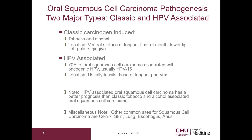HPV-associated tumors are usually located on the tonsils, base of tongue, or pharynx. HPV-associated oral squamous cell carcinoma has a better prognosis than classic tobacco and alcohol-associated oral squamous cell carcinoma. Please note that other common sites for squamous cell carcinoma are the cervix, skin, lung, esophagus, and anus.